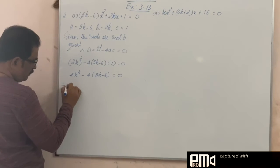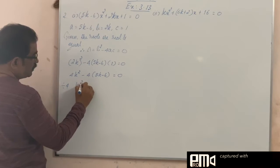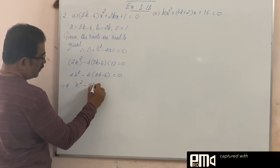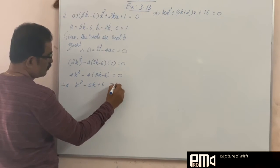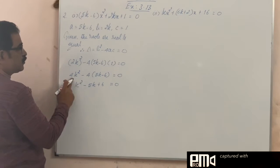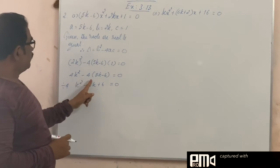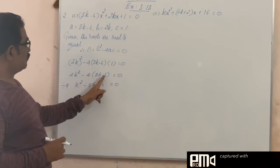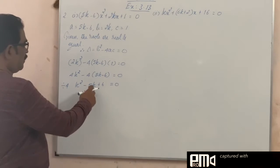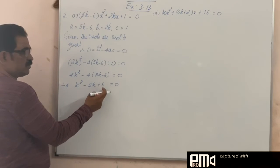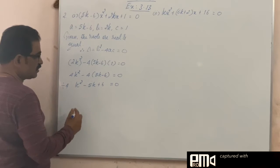I divide by 4, k square minus 5k plus 6 is equal to 0. After dividing by 4, these two fours will get cancelled. Take this minus inside, minus 5k, minus into minus plus 6. On factorization, we get product is 6 and sum of the factor is minus 5.